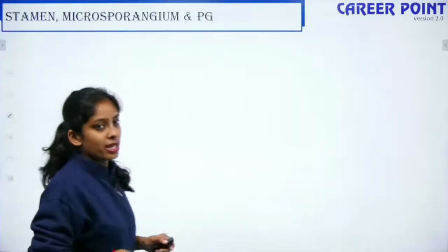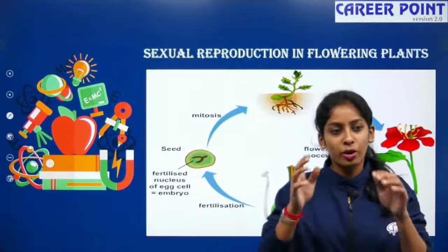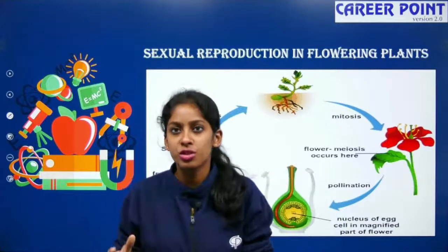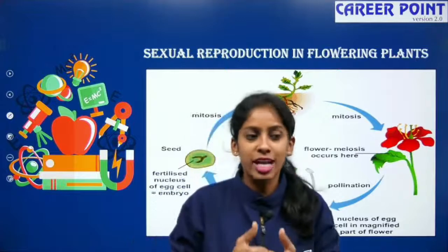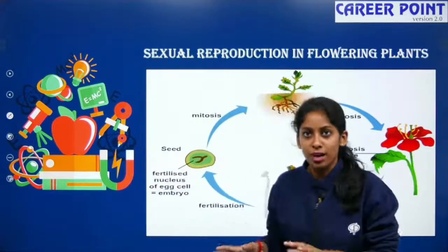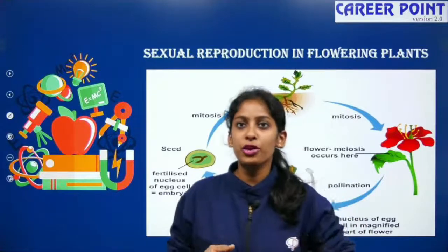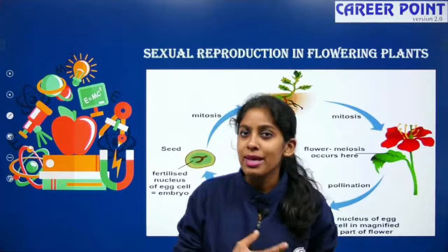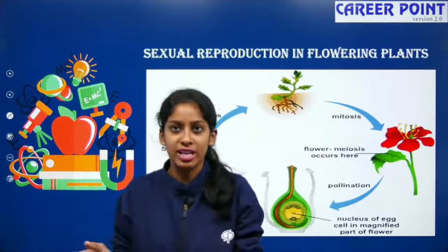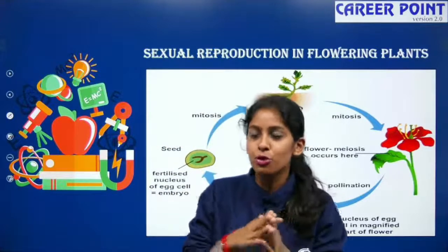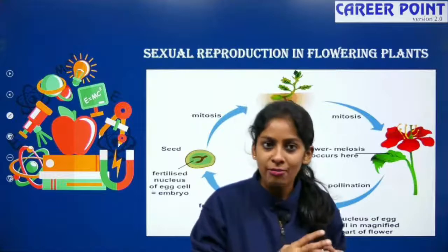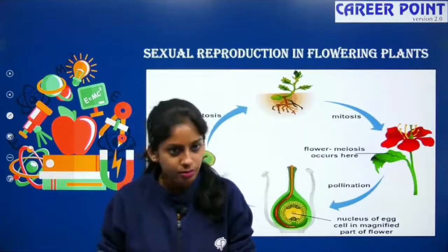Under Sexual Reproduction in Flowering Plants, we are going to see how a flowering plant reproduces sexually. Any organism that reproduces sexually must produce gametes — that is the only way of sexual reproduction. In the case of plants, they have to produce male gametes and female gametes. Before we see what those are, we need to understand the structure of the androecium (male portion) and the gynoecium (female portion).